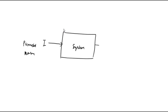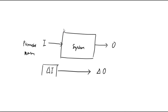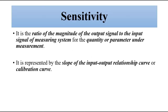Sensitivity means: suppose the input variable or input parameter is changed by a very small factor delta I. Because of this small change in input, what is the change in output that is produced? These two things — a small change in input causing how much change in output — and the ratio between the two is called sensitivity. In simple words, it is the ratio of the magnitude of the output signal to the input signal of a measuring system.